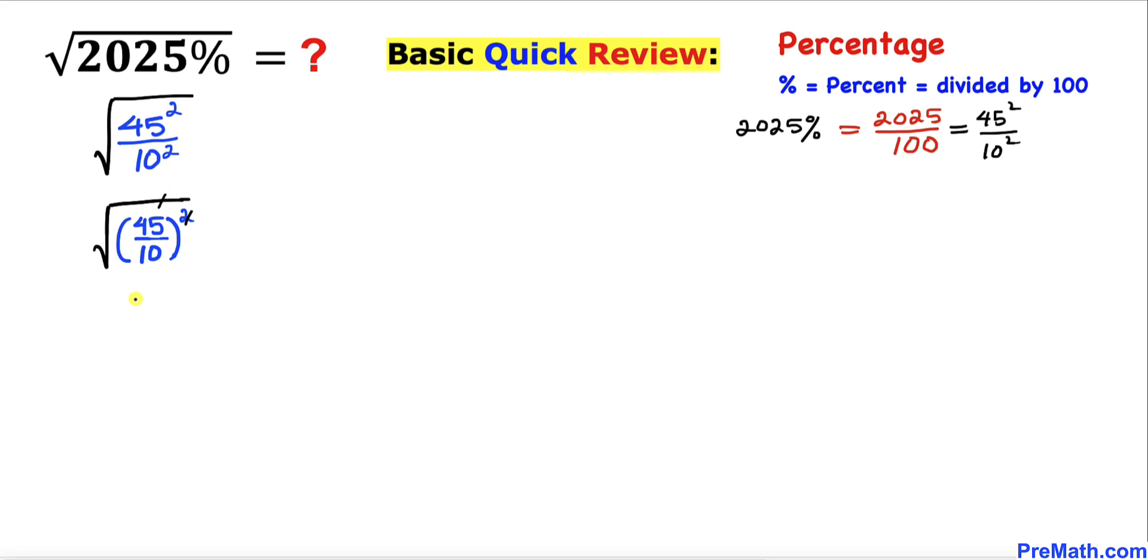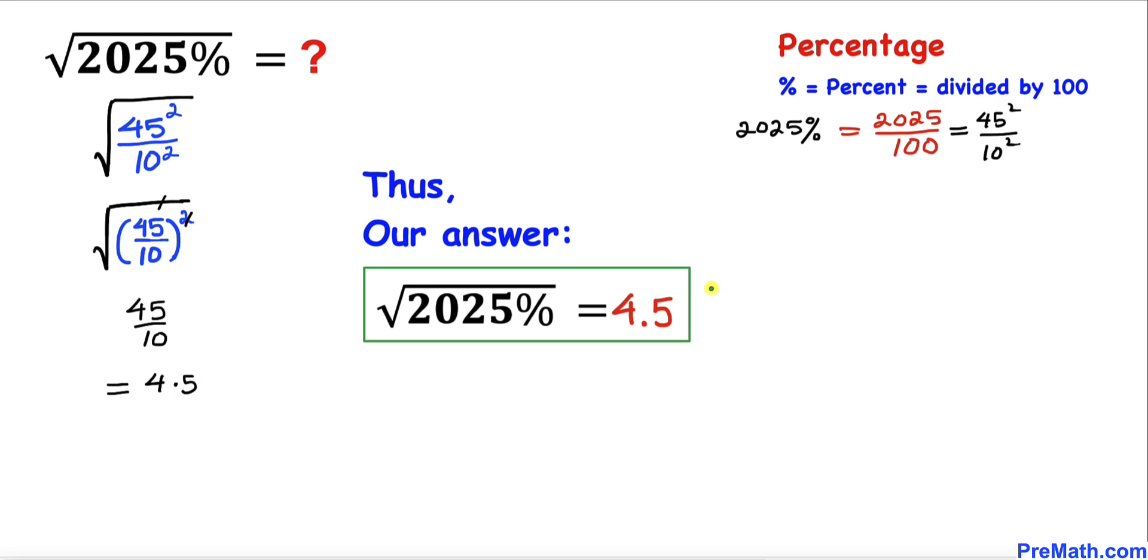And now we can see that this square and square root, they undo each other. So we simply ended up with 45 over 10, and that is equal to 4.5 in terms of decimal. Thus our simplified answer turns out to be 4.5.